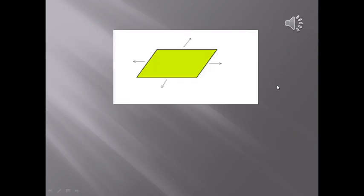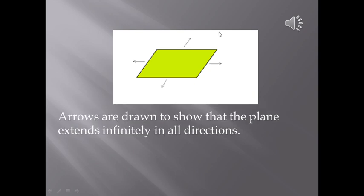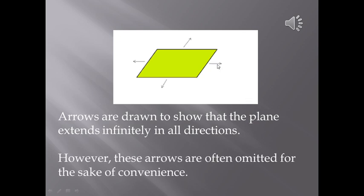Arrows are drawn to show that the plane extends infinitely in all directions. However, these arrows are often omitted for the sake of convenience. That means you need not show these arrows in the figures when you draw them. Actually, there are arrows which show that it extends in all directions, same like a line. But for a comfortable drawing of figure, we mostly avoid drawing these arrows.